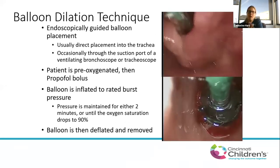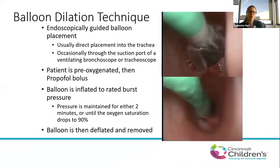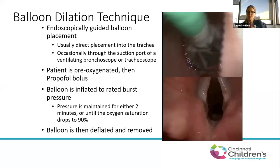Balloon dilation is the mainstay of endoscopic intervention. Here in Cincinnati, we endoscopically place the balloon spanning the stenosis, under direct visualization with the telescope. You always want to pre-oxygenate because you're about to completely obstruct the airway, and we'll give a bolus of propofol because airway dilation is very stimulating. The balloon is then inflated to rated burst pressure and kept inflated for two minutes, or until oxygen saturation drops below 90%, then deflated.